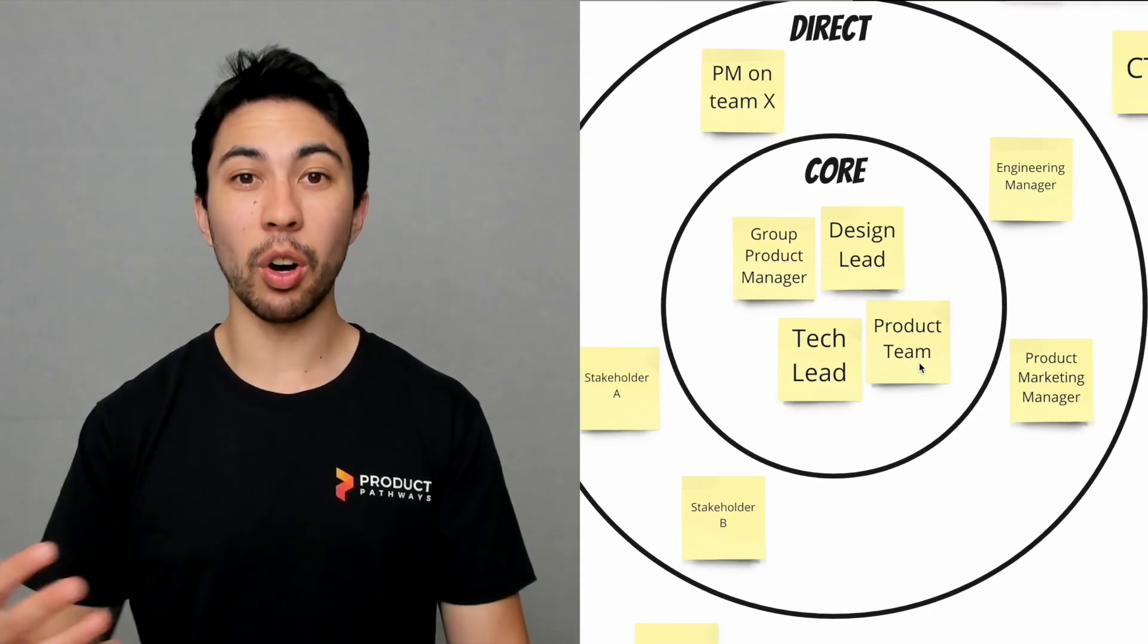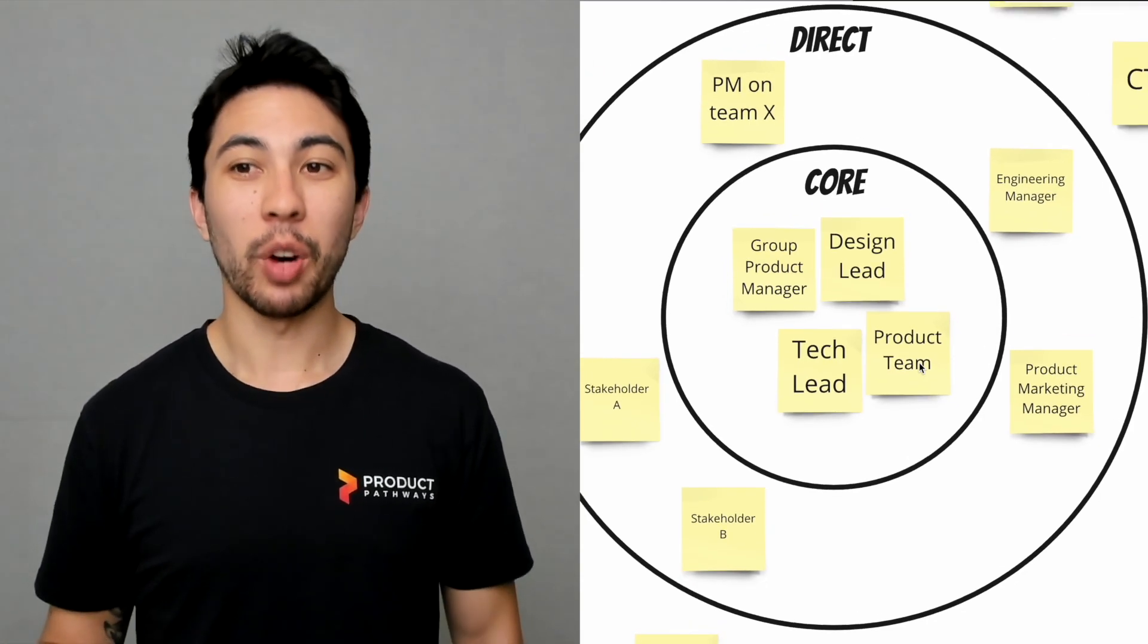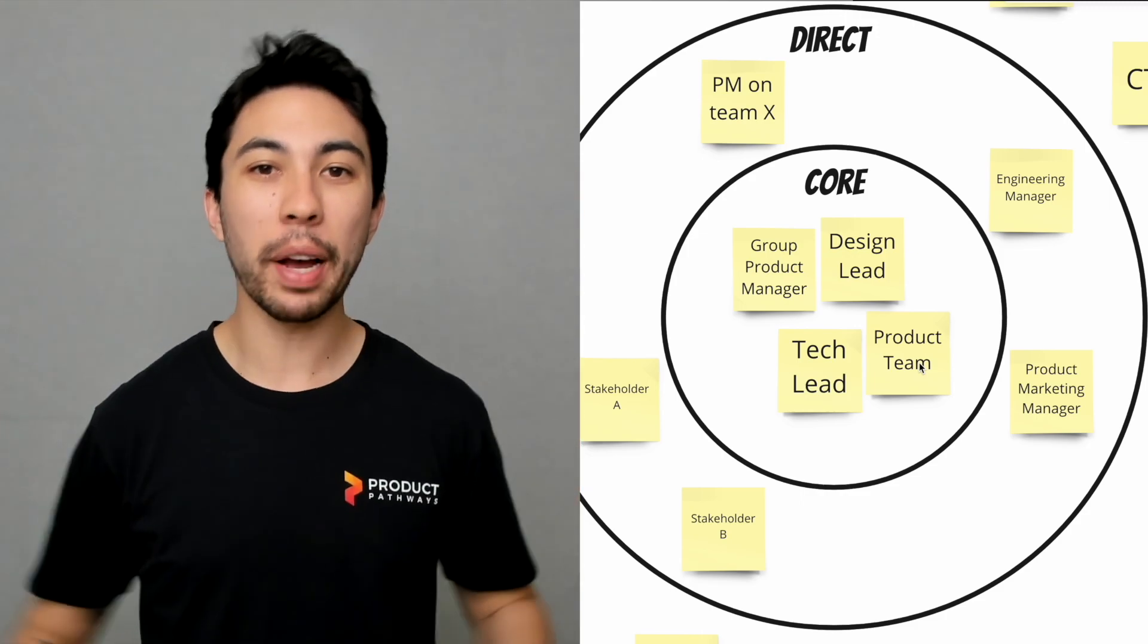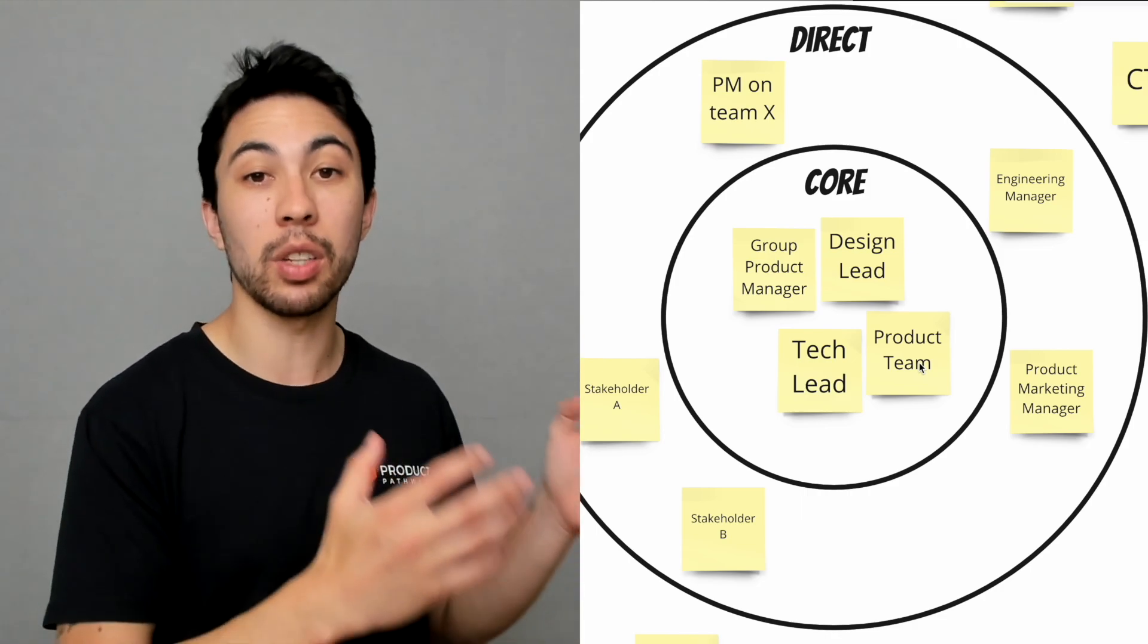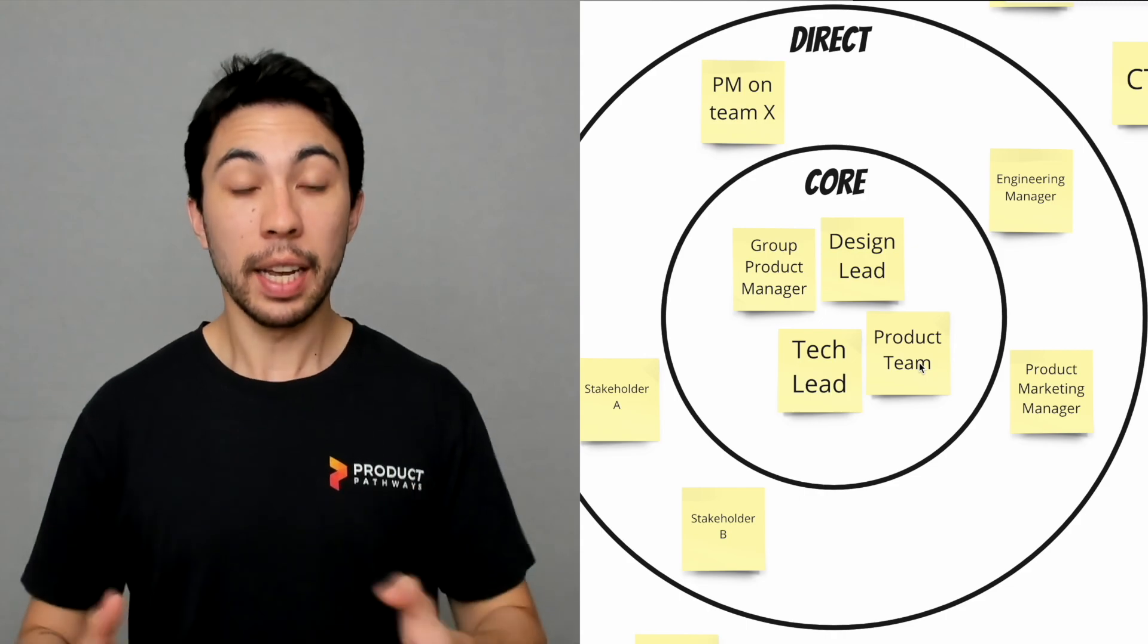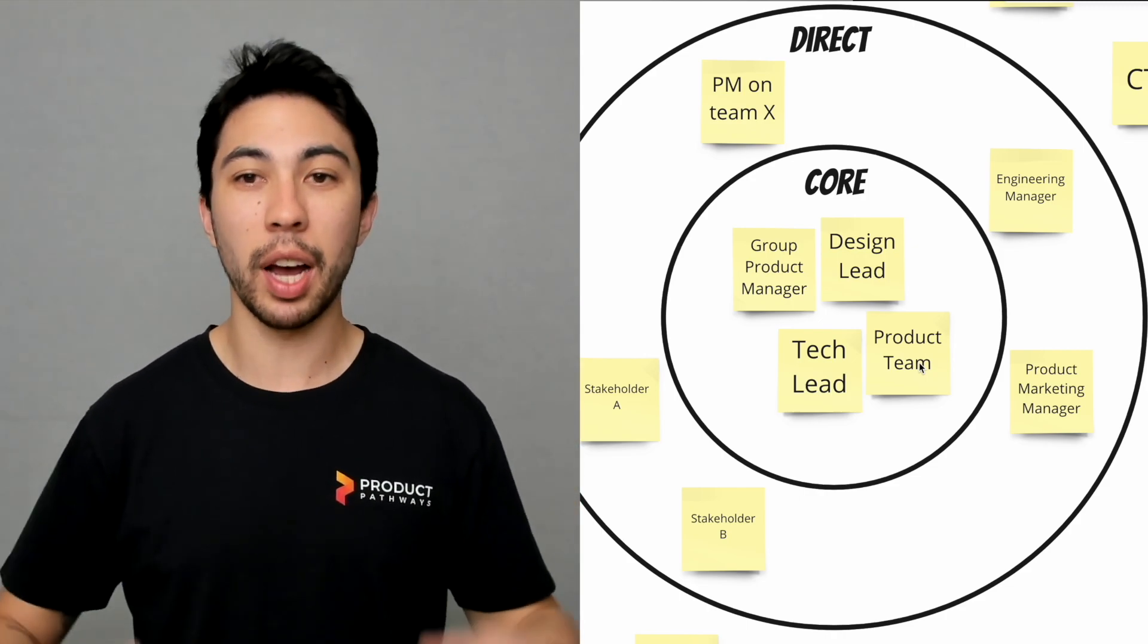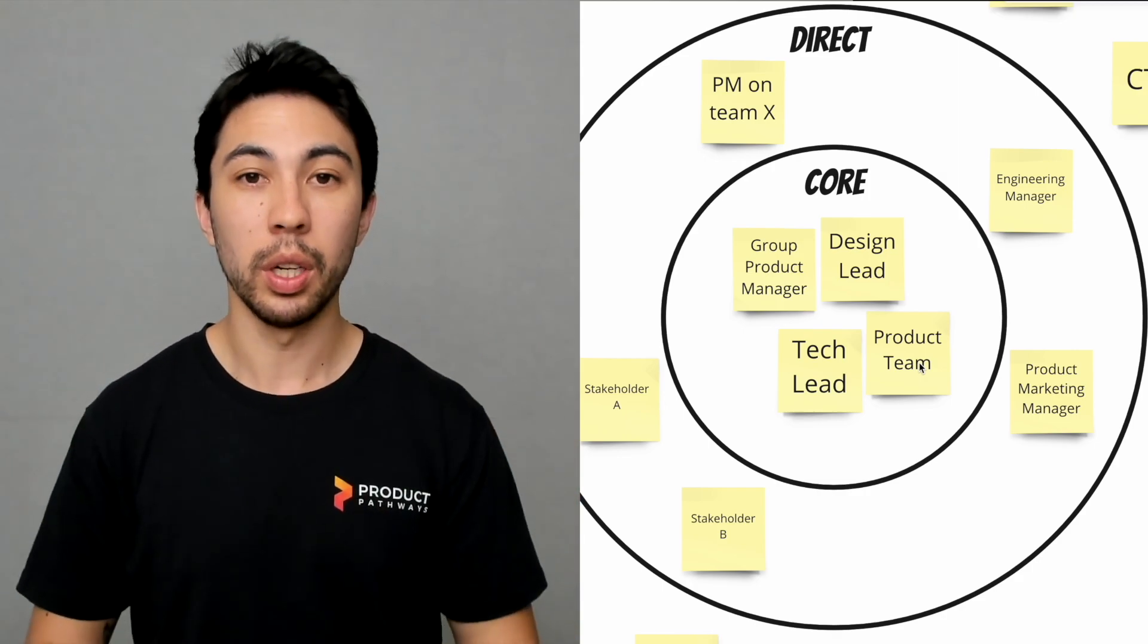These people are still involved on a day-to-day basis, but this isn't their life. Core stakeholders—this is what they are worrying about 24/7. They're either part of the team in this example or someone like your direct manager who is part of their area of responsibility. They think about this all the time; this is their core thing.